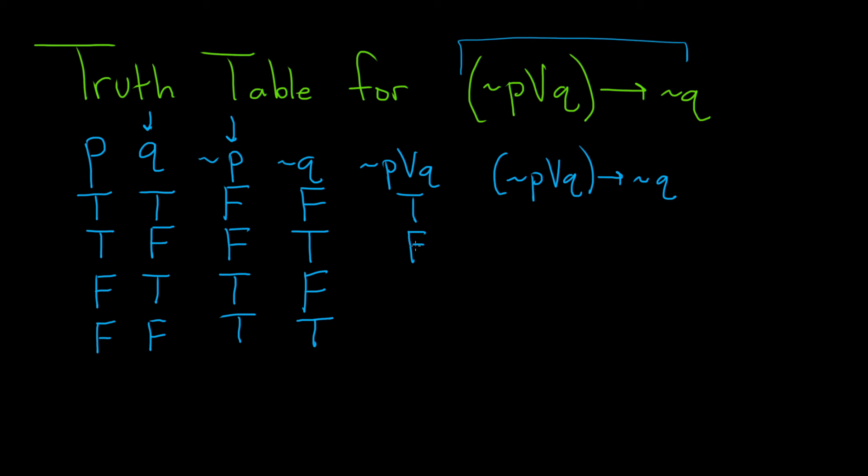Again, the or is true when at least one of these is true. It's false only when both are false, which is this case here. The second case here, it's both true, so it's true. And the last case here, it's true, so it's true. If you get any trues, it's going to be true.